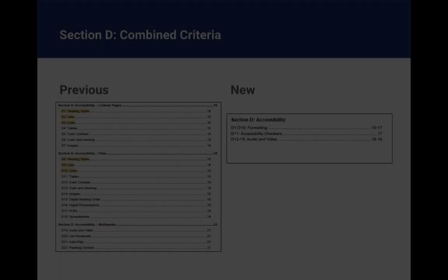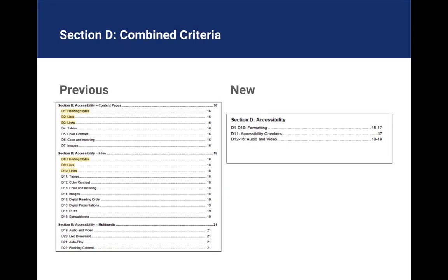No changes were made in section C. For section D on accessibility, the criteria were combined to make it a shorter list and to more accurately reflect the location of various criteria.